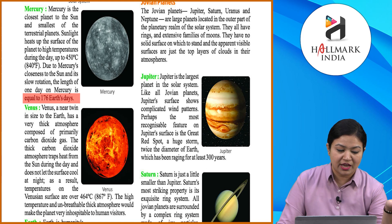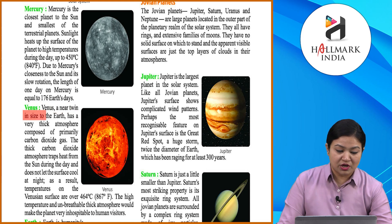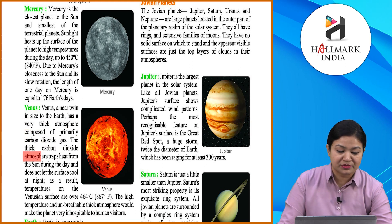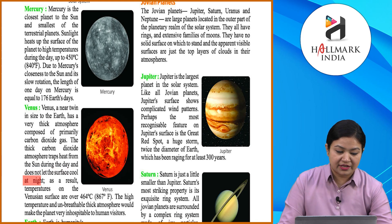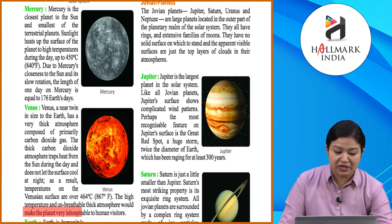Venus and Earth are near twins in size. Venus has a very thick atmosphere composed primarily of carbon dioxide gas. The thick carbon dioxide atmosphere traps heat from the Sun during the day and does not let the surface cool at night. As a result, temperatures on the Venetian surface are over 464 degrees Celsius or 867 degrees Fahrenheit. The high temperature and unbreathable thick atmosphere make Venus very inhospitable to human visitors.